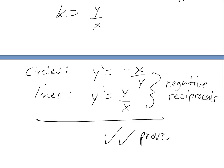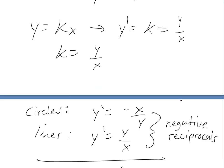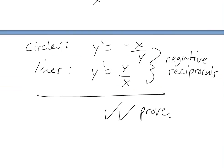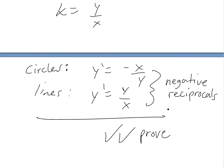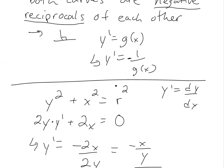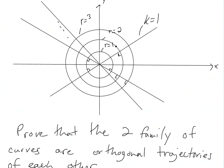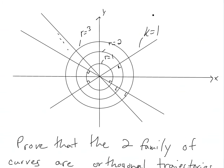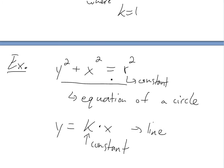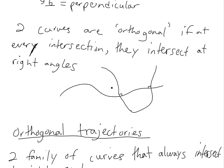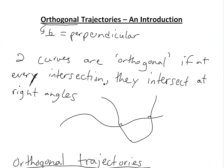That's our proof. All you need to do is take derivatives and make sure they're negative reciprocals — then you have an orthogonal curve. This concept is really used in a lot of engineering, like electrical engineering where you look at magnetic fields and forces. Thanks for watching, and stay tuned for another Math video.